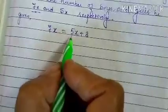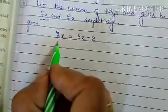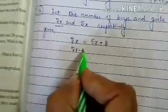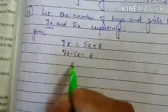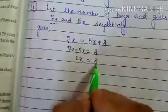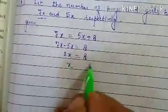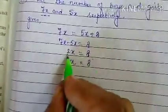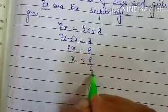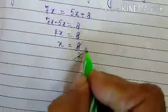Now we will simplify it by keeping the like terms on one side, that is 7x minus 5x equals 8. So 2x is equal to 8. Transpose this, x equals 4.